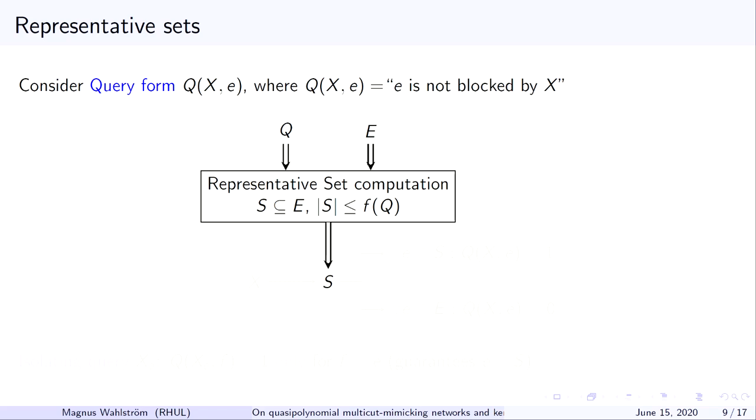Which takes two parameters, a set of elements X and a single edge E from the edge set of the graph. The interpretation of Q(X, E) is the set X does not block the edge E. And what the representative set lemma says is that if you have such a structure in the right format, some linear representation, you feed the lemma the representation of Q and the representation of your edge set E. And it produces a subset of edges whose size depends on the structure of Q. And the guarantee is that for any set X that is given to you in the future, if there exists any edge which is not blocked by X in the original edge set E, then one such edge exists in S. So the set of edges S represents the full set of edges E with respect to the query structure Q.